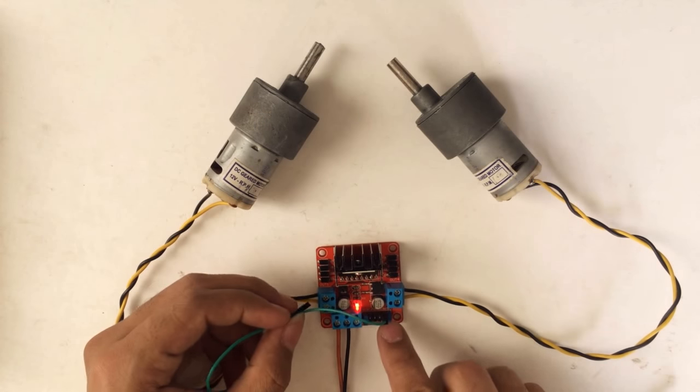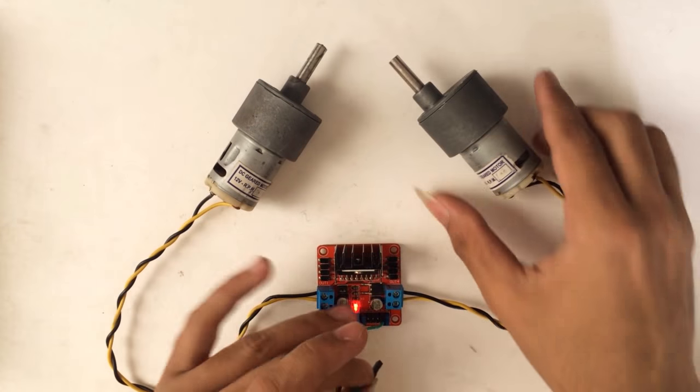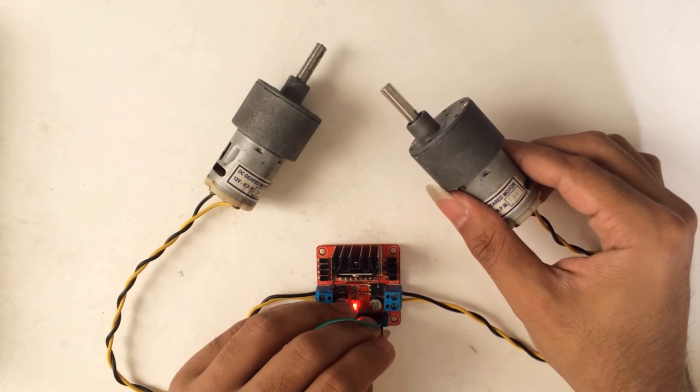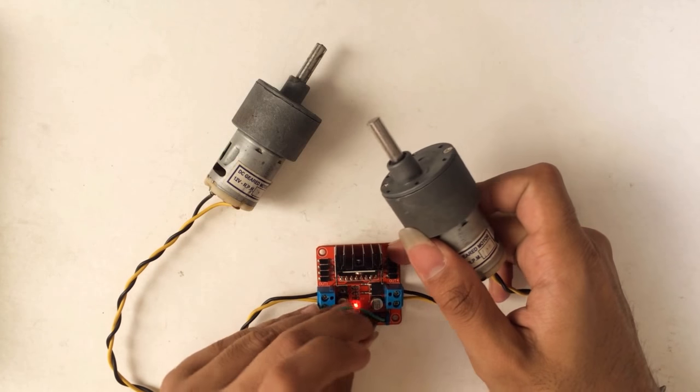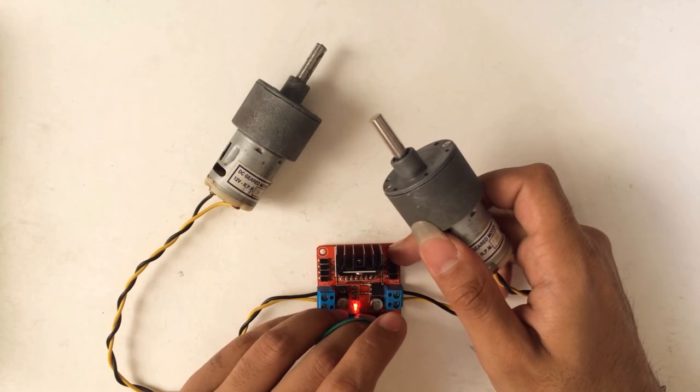We are going to test input 4 which is for Motor B, so we have our motor here. Okay, here it goes in one direction. If we take this out and insert this pin in input 3, it goes reverse.